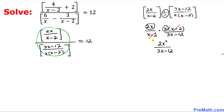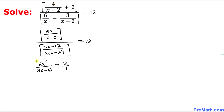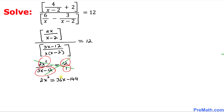So therefore the left hand side can be replaced by the simplified form: 2x² divided by (3x minus 12) equals 12 on the right hand side. I can make 12 a fraction by putting 1 underneath. Now let's cross multiply on both sides: 2x² times 1 gives us 2x², equals 12 times (3x minus 12), which gives us 36x minus 144.